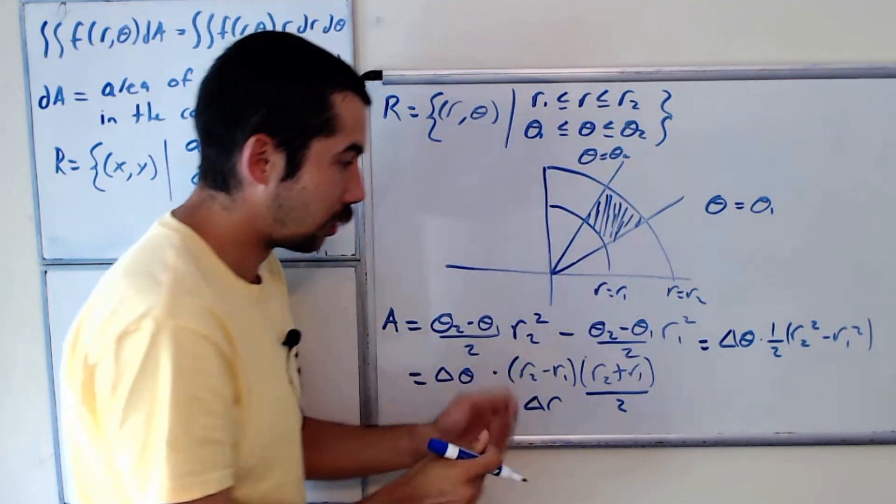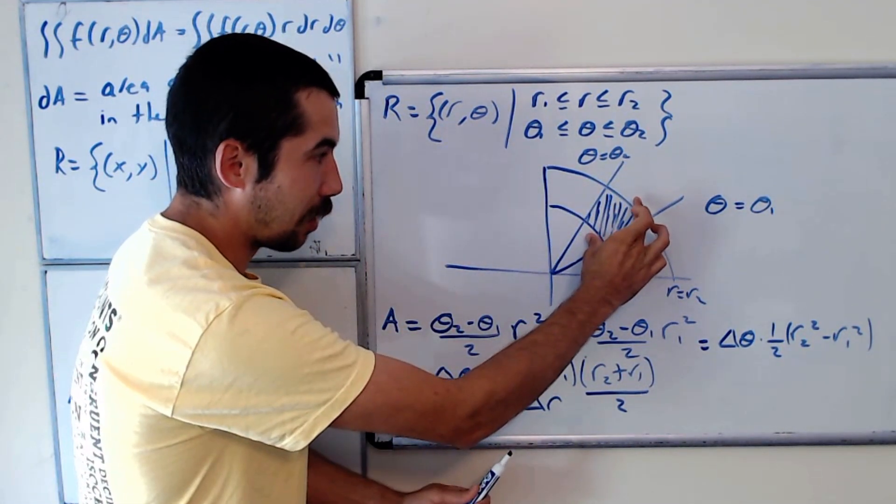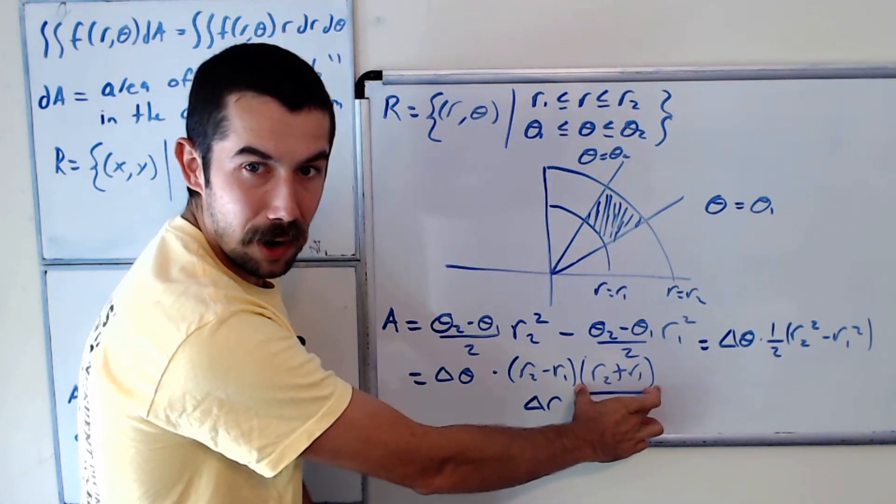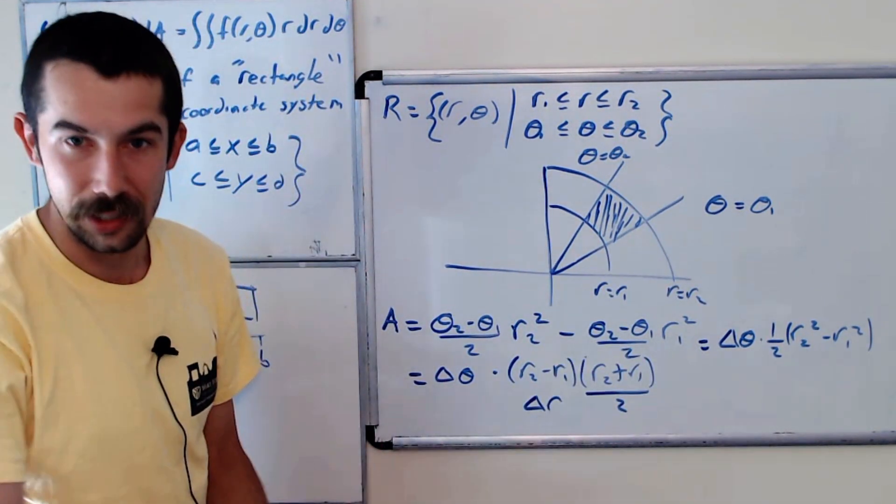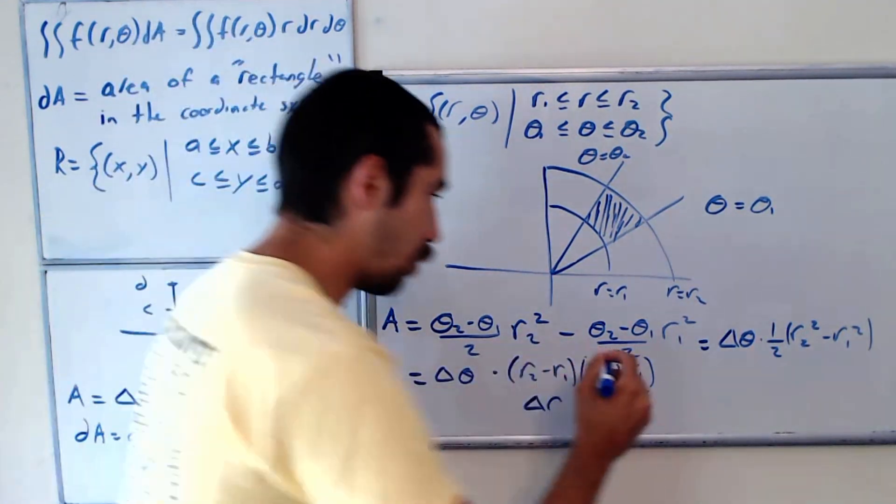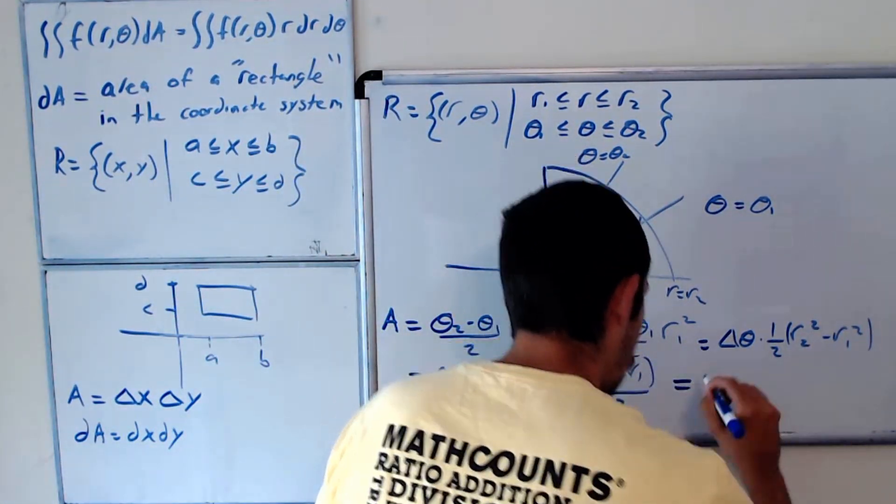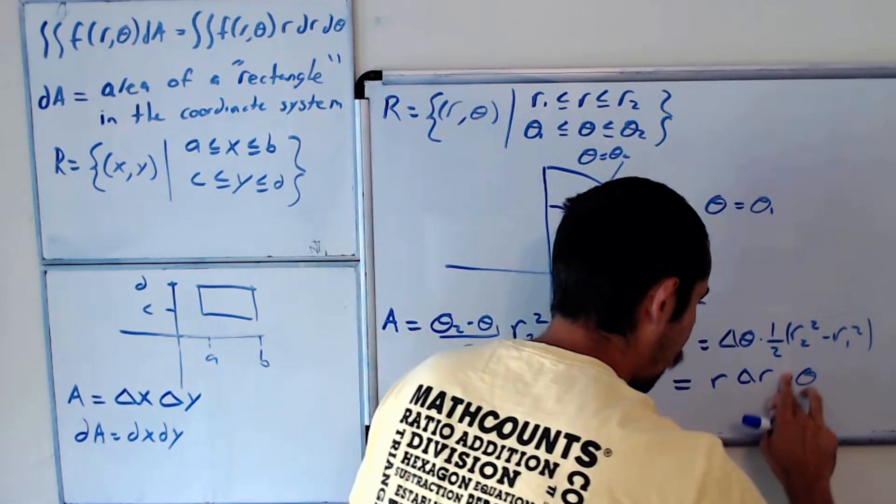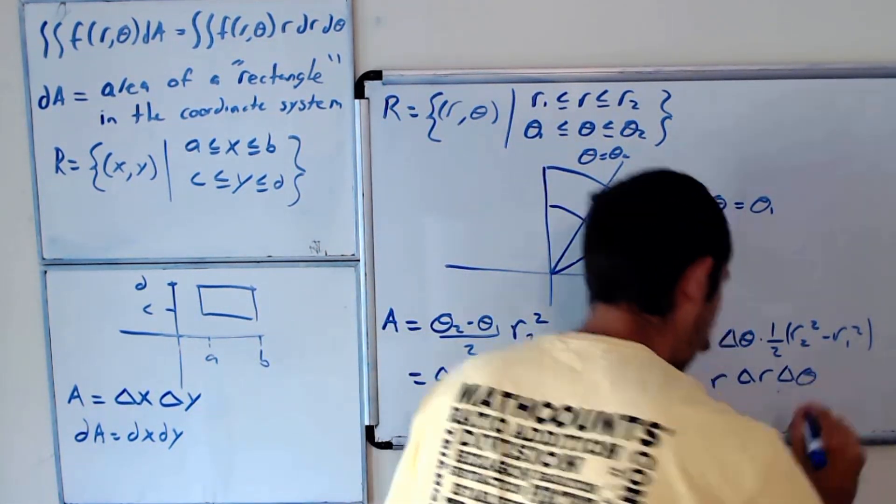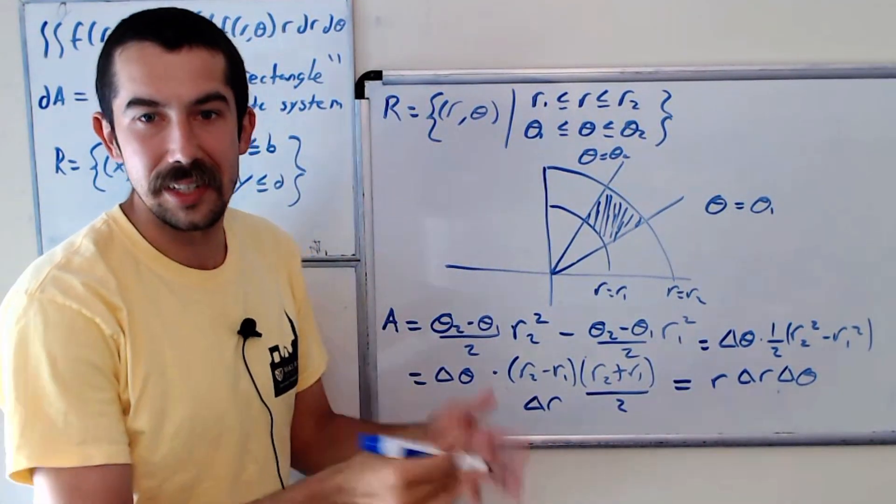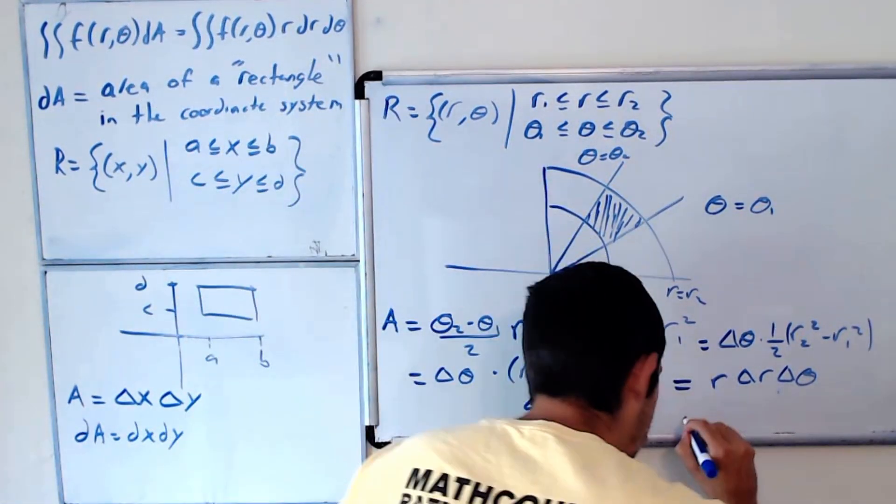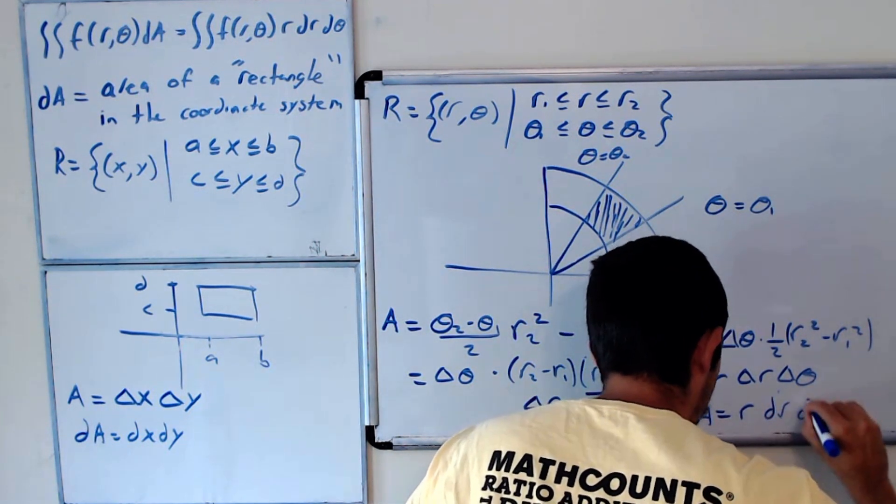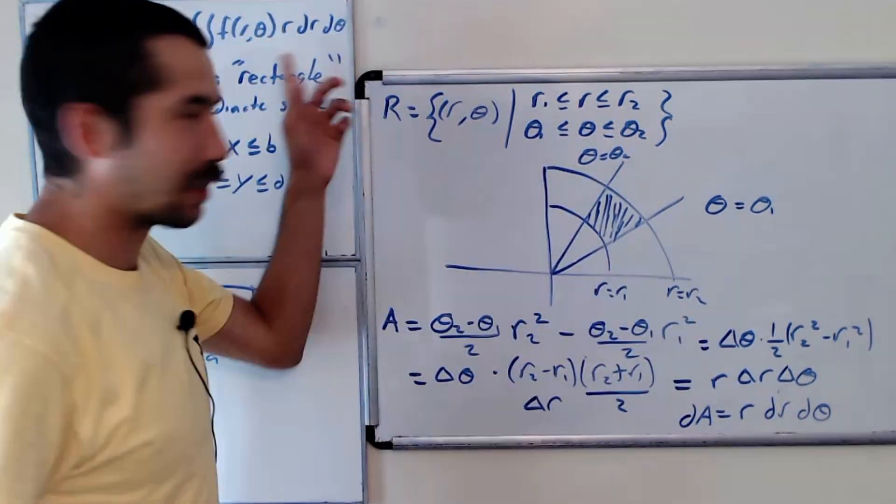So this value is going to be 2r, and then when we cancel out the twos, we're just left with r. So this equals r delta r delta theta. And as we take the limit as delta r and delta theta go to 0, we get dA equals r dr d theta, you know, just as the formula says.